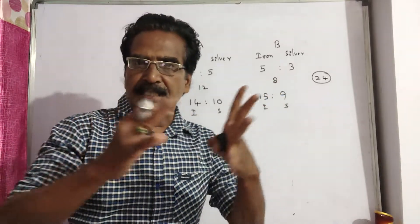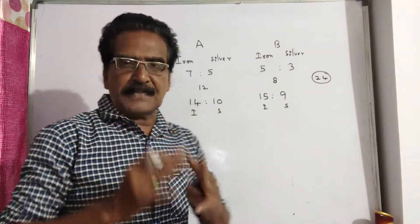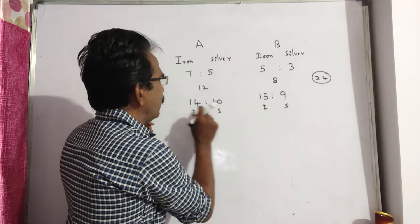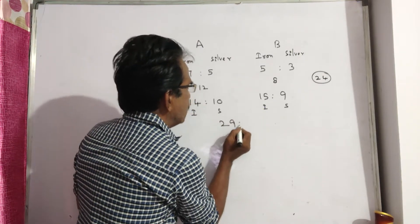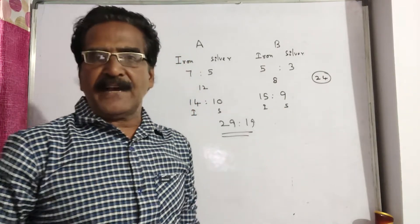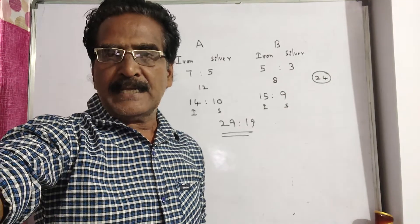Now these two quantities are mixed. These two alloys are mixed. So then the ratio will be iron plus iron, silver in the new alloy C. Okay, friends.